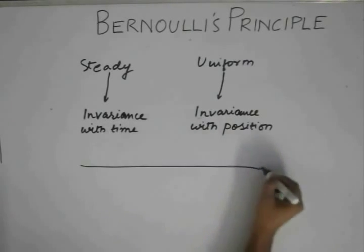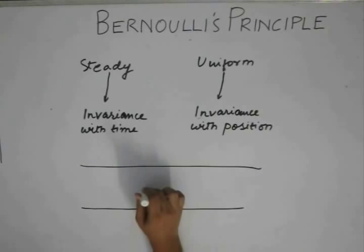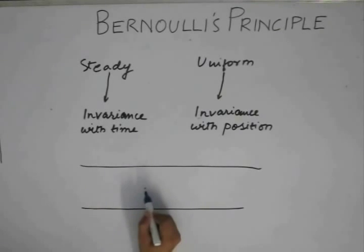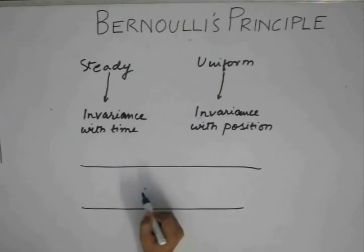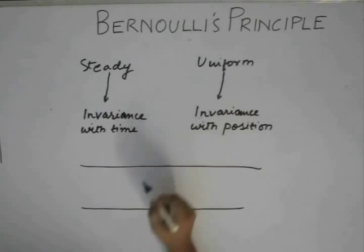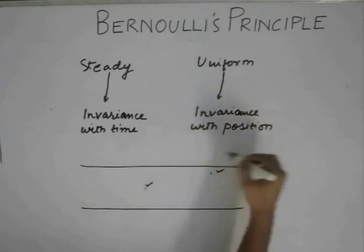Let's say I consider a duct and pick one point. When I say the flow is steady, I mean that at any time t, the velocity or any other property of the fluid will not change at this position. When I say the flow is uniform, whatever property exists here does not change if I move to another point. That is what uniform means.